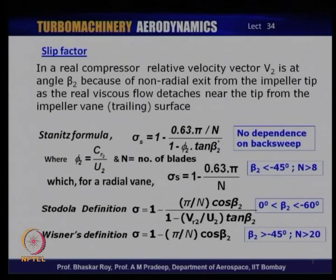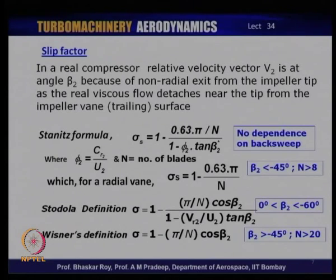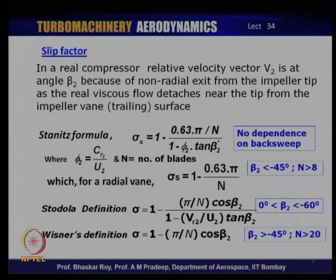We have seen that forward-swept blades are normally not used in modern centrifugal machines because they have an inherent tendency to be unstable in operation. Hence, typically modern centrifugal compressors do not even consider forward sweep as an alternative design choice. The choice is mainly from radial vane to backward swept, and more and more designers are going for backward-swept blades.